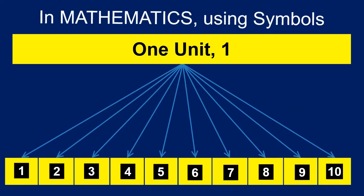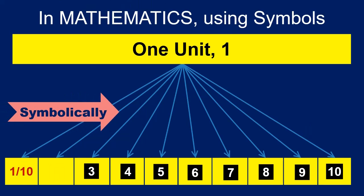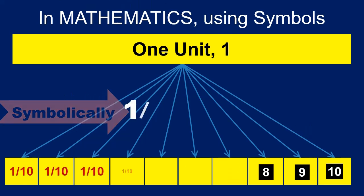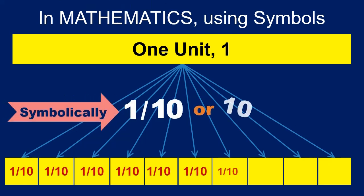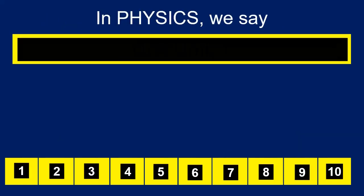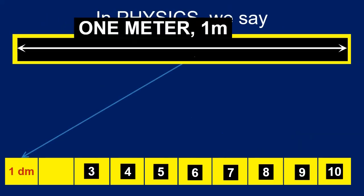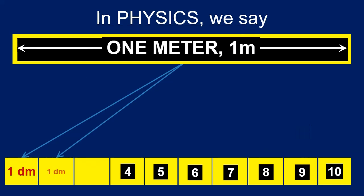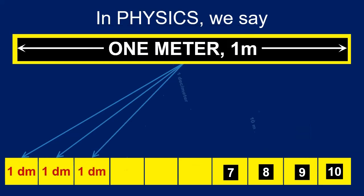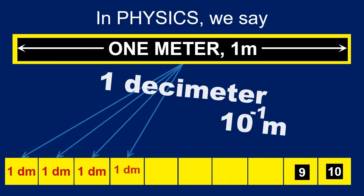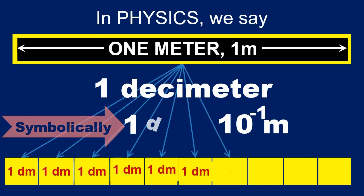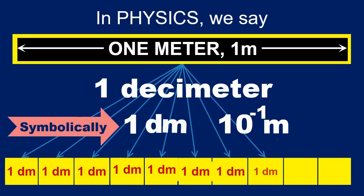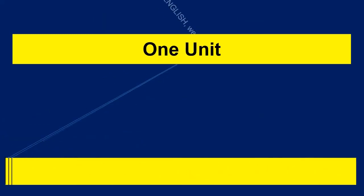In mathematics, symbolically, we write each of them as one divided by one followed with zero, or ten raised to the power of minus one. In physics, for this length represented as one meter, we call one of these equal quantities as one decimeter, written as one followed with a small d and a small m.